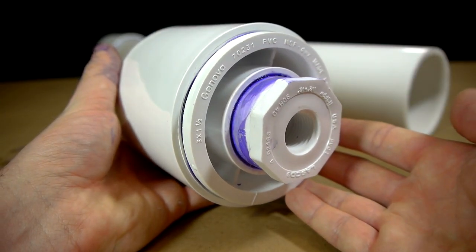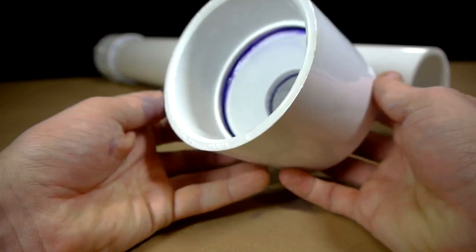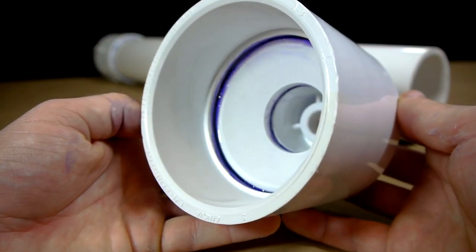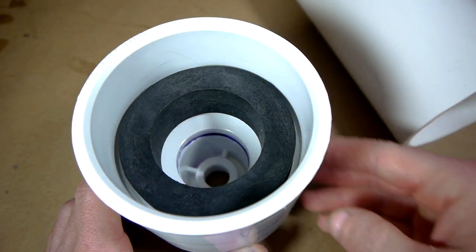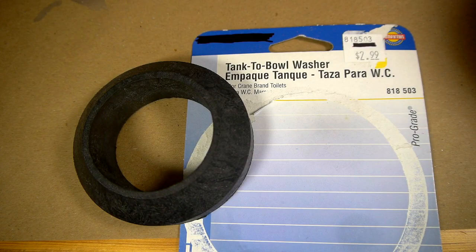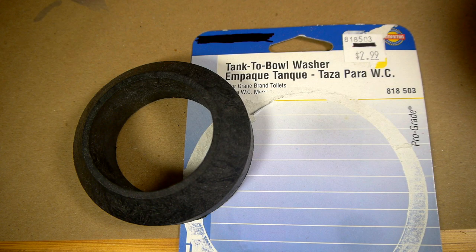This will make up the back of the cannon, but before gluing the assembly to the chamber, we need to insert a bumper to cushion the piston that will be inserted later from slamming into the hard plastic reducer when fired. The bumper I will be using is a 3 inch tank to bowl washer that is usually used for repairing toilets, and can be found in the plumbing section of most hardware stores.